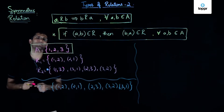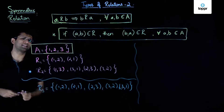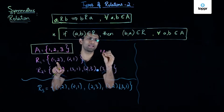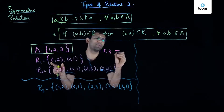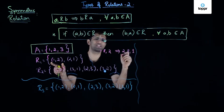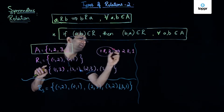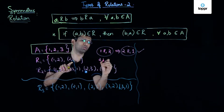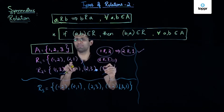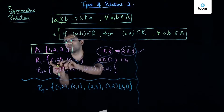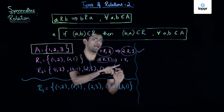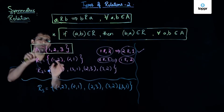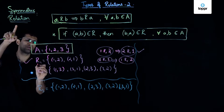Let us understand this by means of an example. Suppose we have a set A consisting of elements 1, 2, and 3, and a relation R1 consisting of ordered pairs (1,2) and (2,1). If 1 is related to 2 by R1, then that implies 2 is also related to 1 by R1, which is satisfied. Likewise, (2,1) implies (1,2) is also part of R1. Because both implications hold for elements 1 and 2, R1 is indeed a symmetric relation on set A.